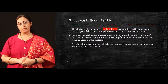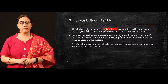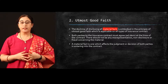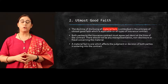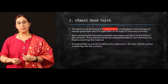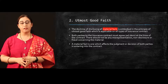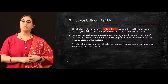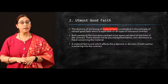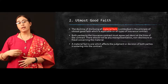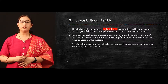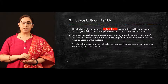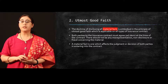Now look at the second: utmost good faith. The doctrine of utmost good faith requires disclosing all material facts. It is a duty of both parties — the insured as well as the insurer — to disclose all related facts and all related material information before moving toward an insurance contract. The doctrine of disclosing all material facts is embodied in the principle of utmost good faith, which is applicable on all types of insurance contracts. For example, if you are taking a medical policy, you need to disclose things such as whether you smoke or consume alcohol — every material fact which is able to affect your contract needs to be disclosed.